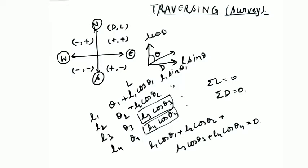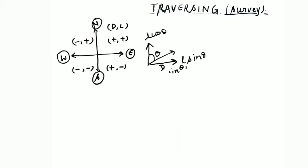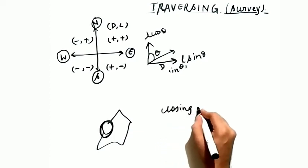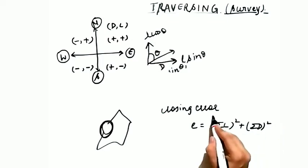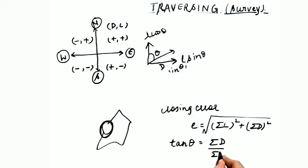The closing error is the amount by which the traverse fails to close. It is represented by E and is calculated as E = √((ΣL)² + (ΣD)²), where ΣL is the algebraic sum of latitudes and ΣD is the algebraic sum of departures. The direction of the closing error is given by tan θ = ΣD / ΣL. These are two important formulas useful in solving numerical problems.